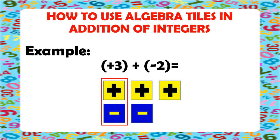Now, we have another yellow tile and another blue tile. So, let's make another 0 pair. After we are done making our 0 pairs, let's count how many tiles we have left. And we have one yellow tile, which means positive. Therefore, positive 3 plus negative 2 is equal to positive 1.